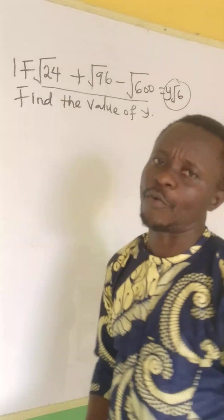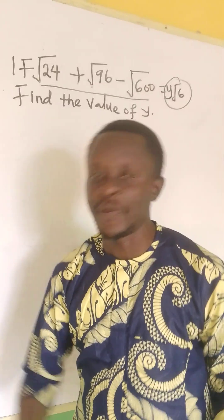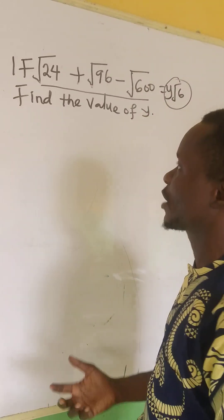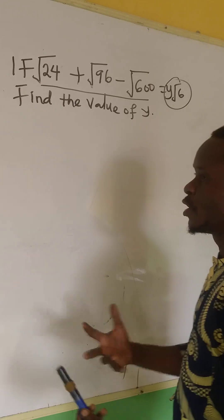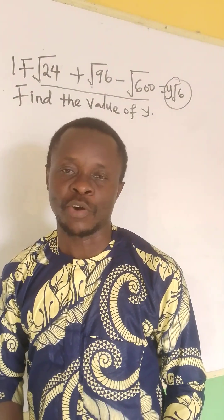So I will start with √24. √24, I need one perfect and one imperfect square. Now that means I will look at what can give me 24. 3 times 8 is 24, but 3 is imperfect, 8 also is imperfect.